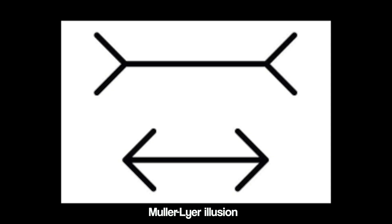So why does this happen? It's because the outer parts of the image — these lines — are influencing the way you perceive the horizontal line. You are not looking at it as separate individual lines but as a whole. Gestalt psychologists would therefore argue that in the real world, what we see only makes sense when we consider the whole image rather than the separate parts.